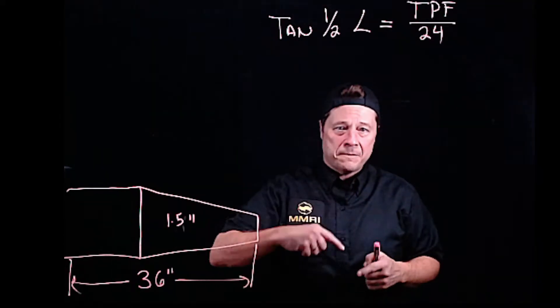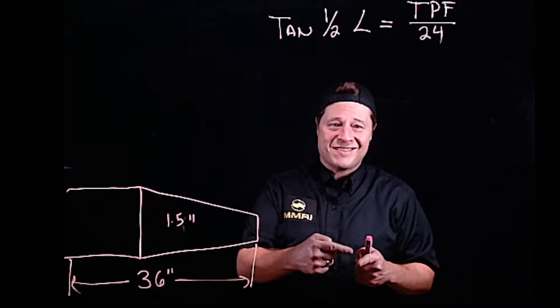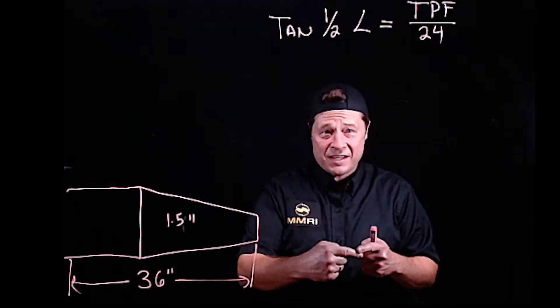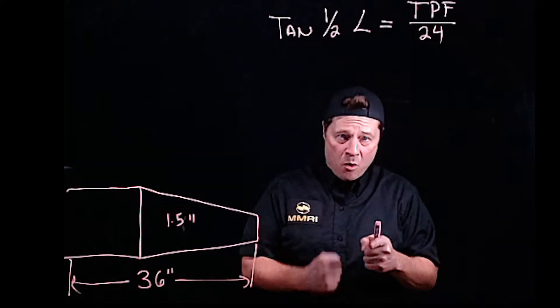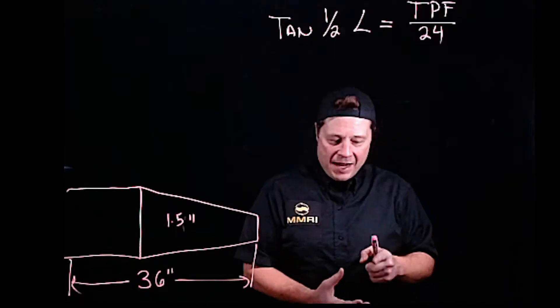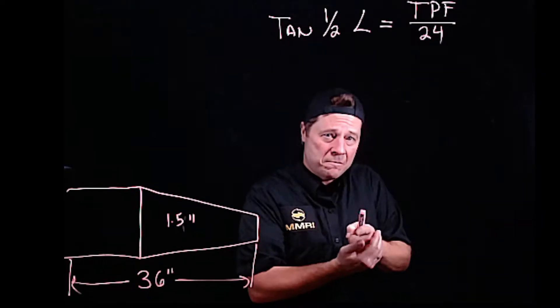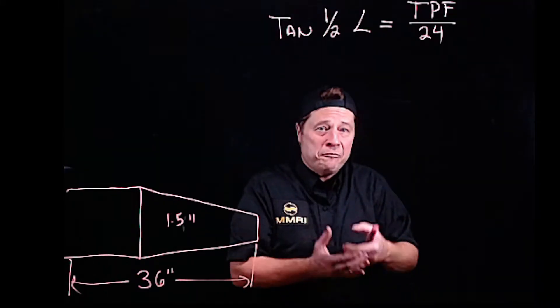But because the part is spinning, if I take 0.001 inches off this side, by the time the other side comes around, I'm still taking off 0.001 inches. If I take a single depth of 0.001, I set my zero by just touching the material, and then I dial in 0.001, I take off 0.002.